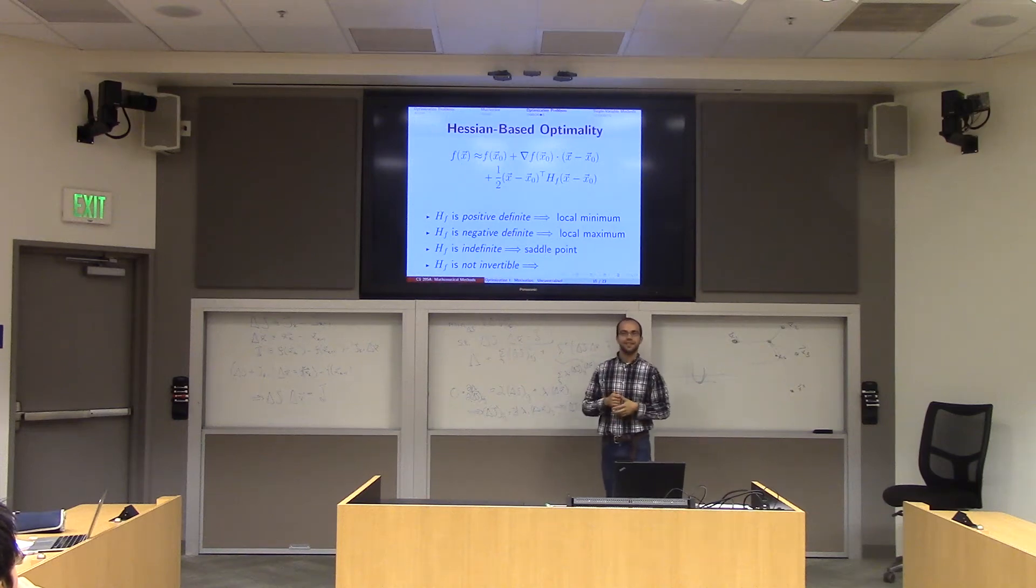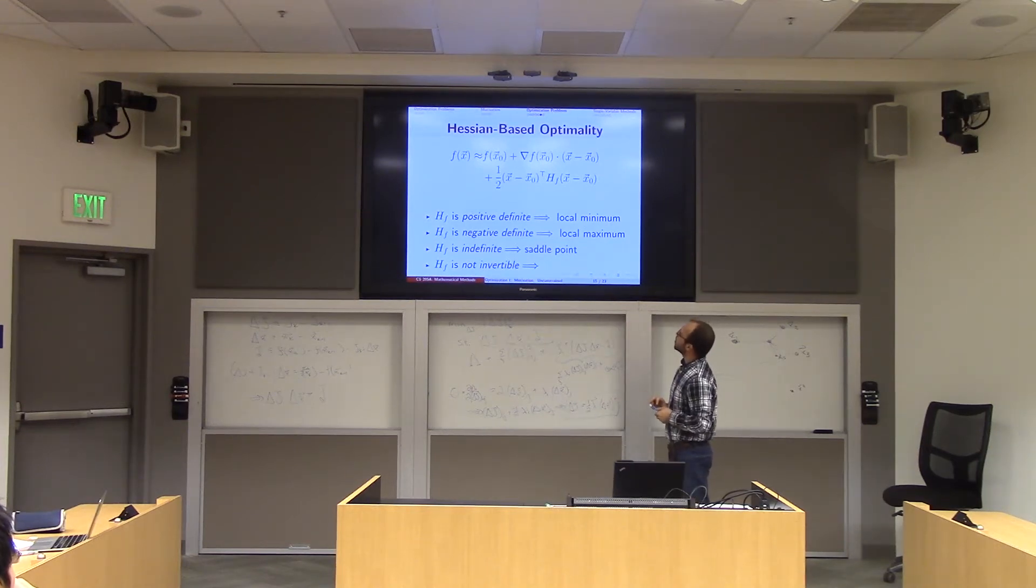When we're optimizing a function of multiple variables, we have different options: a local minimum, local maximum, something phasing downward, or some kind of saddle. In particular, if h is positive definite, you're at a local minimum.